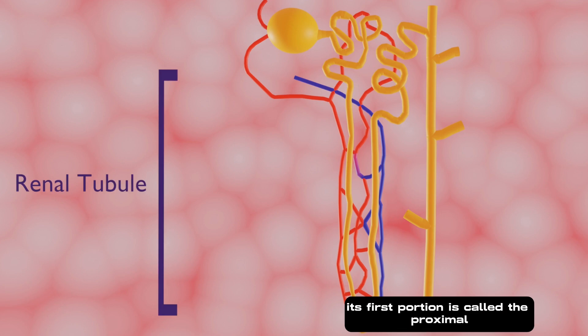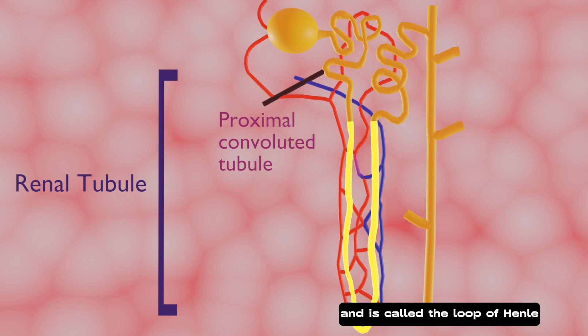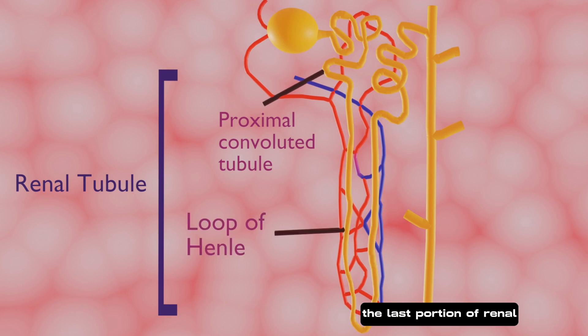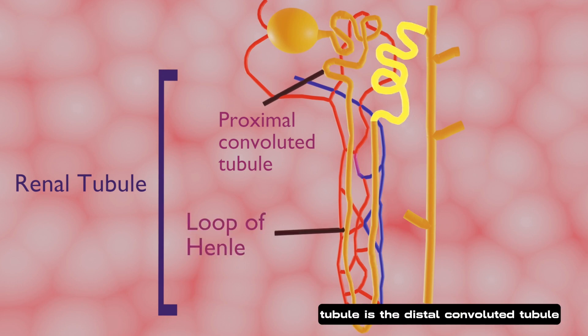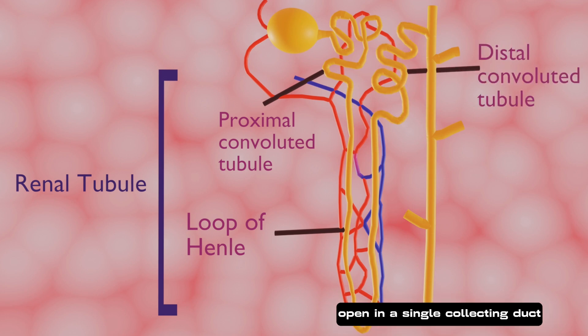The first portion of the renal tubule is called the proximal convoluted tubule. The next portion is U-shaped and is called the loop of Henle. The last portion of the renal tubule is the distal convoluted tubule. The distal convoluted tubules of many nephrons open into a single collecting duct.